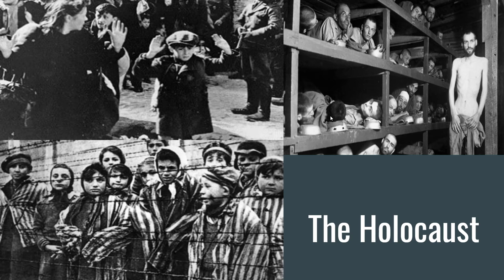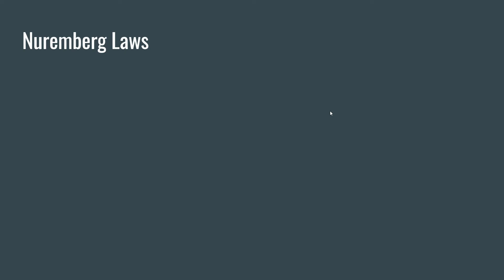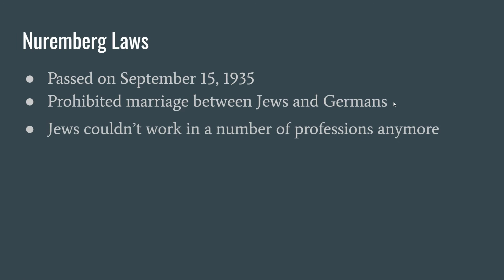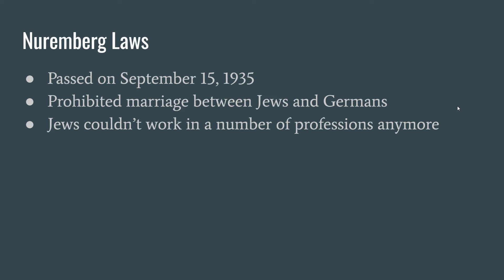The two topics you're going to learn about today are some of the earliest things the Nazis did before the concentration camps really started. The first one is the Nuremberg Laws. These were laws passed in 1935. The primary thing they did is marriage between Jews and Germans could not happen. Think about it — in our country you can marry whoever you want, and the Nazis took this right away. Jews also couldn't work in a number of professions anymore, like doctors, teachers, or most college-educated jobs.